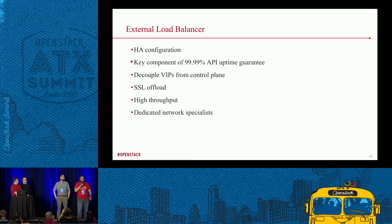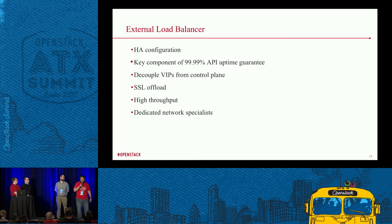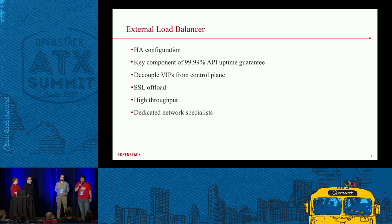Thanks, John. As you can see, the Rackspace Private Cloud reference architecture powered by Red Hat leverages a dedicated pair of F5 HA-configured load balancers, and that's a key component to our 4.9 API uptime. We've done this for a few reasons. The first is to decouple the virtual IPs from the control plane — this allows us to mark a controller node pool member down in order to proactively patch your environment with minimal to no downtime. We've also wanted to offload SSL traffic onto the F5 load balancer, which provides higher throughput as we can leverage the SSL accelerator module on the F5. And lastly, we have a team of dedicated network specialists who have expertise in configuring the F5 hardware load balancers and serve as an escalation point for any network issues.